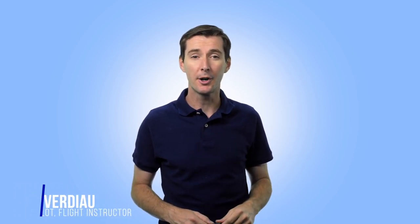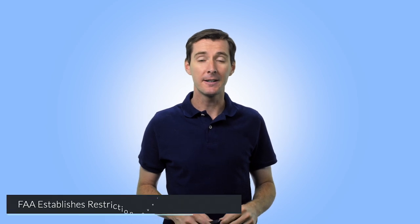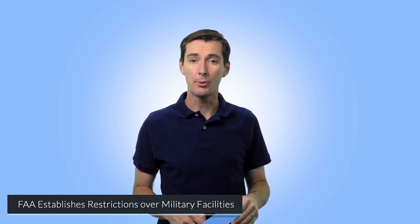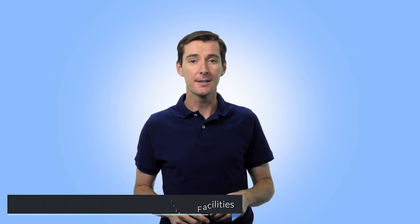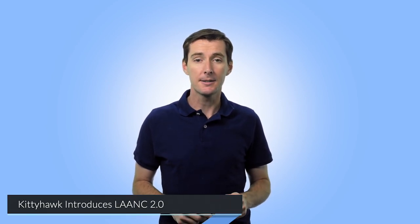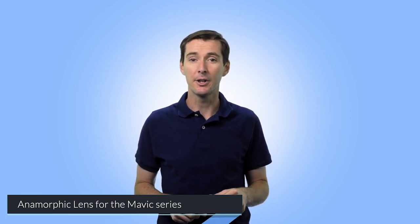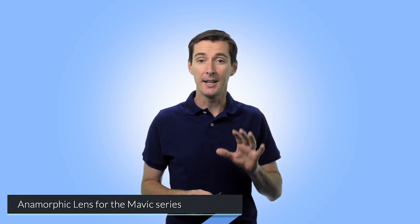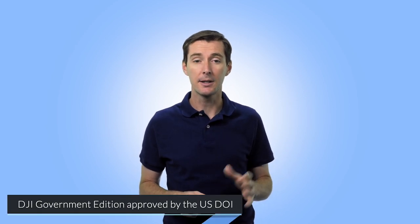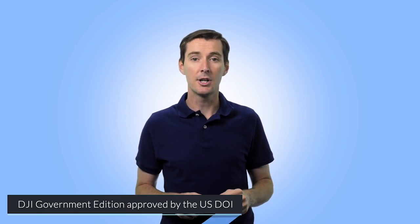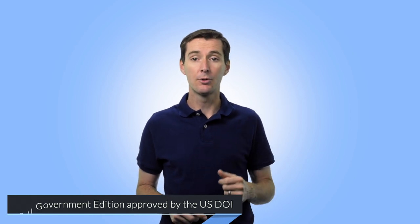Welcome to your weekly U.S. news update. Today I've got four things to cover. First, the FAA added limitations and restrictions on drone operation over certain military facilities. Next, I want to talk about Kitty Hawk introducing Lens 2.0, their new software version. I want to talk about a new anamorphic lens for Mavic series drones, and last, the DJI government edition, which has been approved by the U.S. Department of Interior. Let's get started.